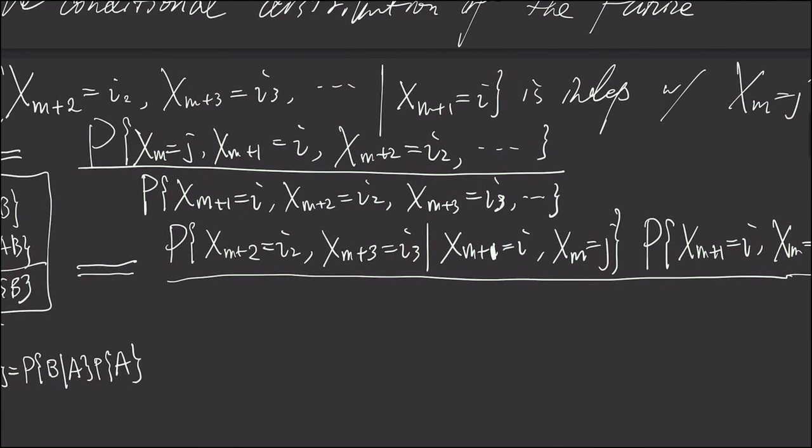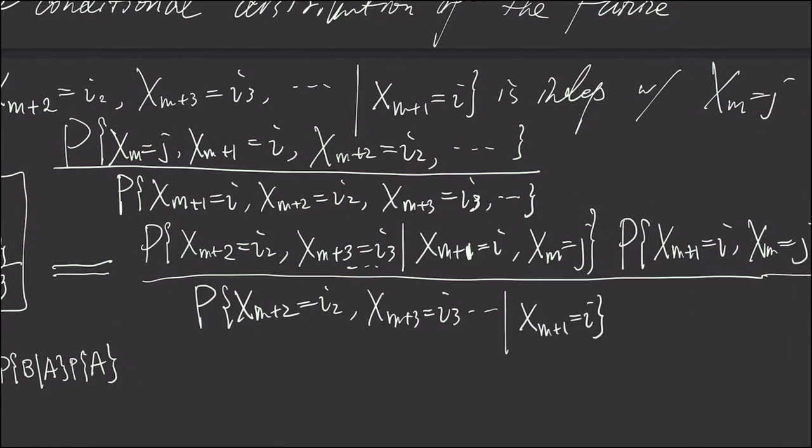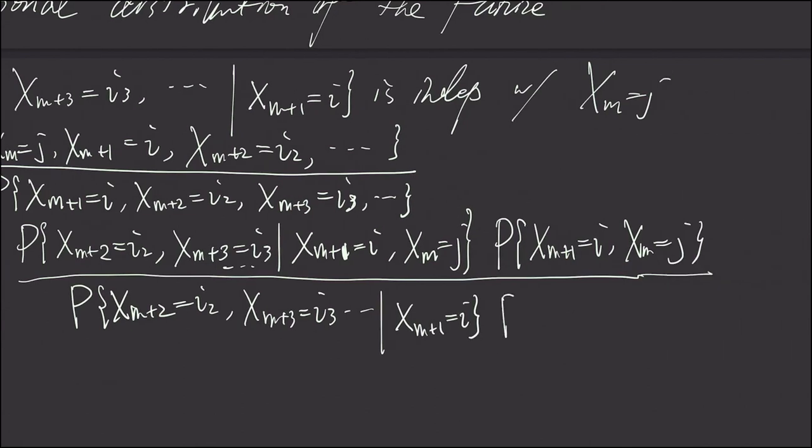And now we apply the same thing to the bottom as well. The bottom becomes X sub M plus 2 is i2, X sub M plus 3 is i3, etc., given only X sub M plus 1 is i, times X sub M plus 1 is i.